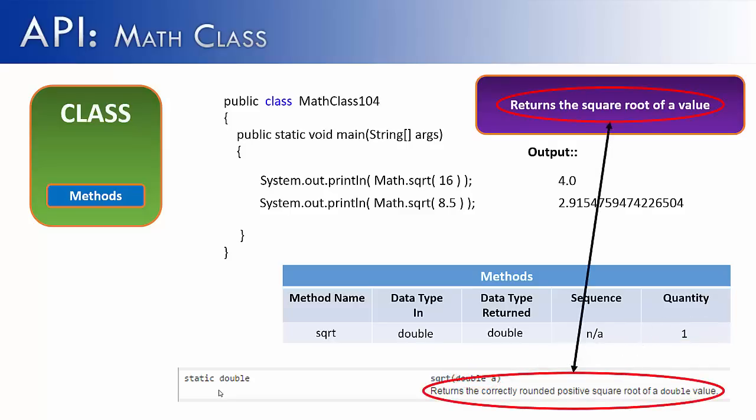And then finally, we say, what is its purpose? And you can see it returns the square root of a value. That's what I wrote. But if you want a more accurate answer, always go to the API. And it says, it returns the correctly rounded positive square root of a double value. So you can see how the API lays out everything you would want to know about this particular method.